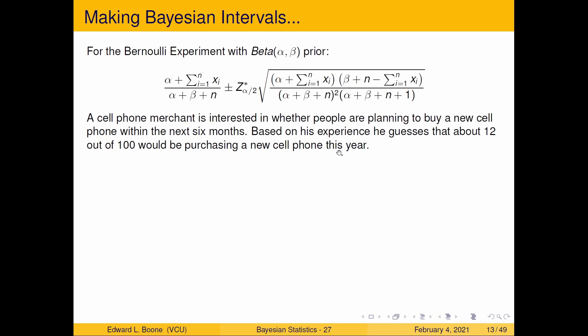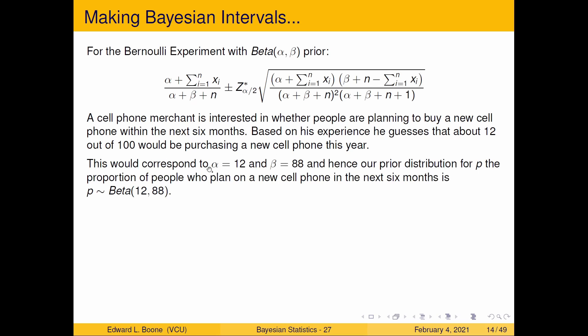Well this would correspond to a beta distribution with α = 12 and β = 88 because you can think of this as α is the number of successes, β is the number of failures. He mentioned 12 successes out of 100 which would mean there would be 88 failures. We'll talk more about getting these prior distributions later but I'm just giving you a glimmer of it ahead of time. So our distribution prior to actually collecting any data is going to be Beta(12, 88). This is based off his prior information, his prior guess.